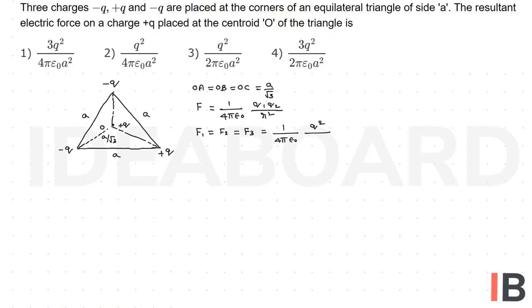That is Q into Q, Q square by A by root 3 whole square, which is A square by 3, which is equal to 1 by 4 pi epsilon 0 into 3Q square by A square.